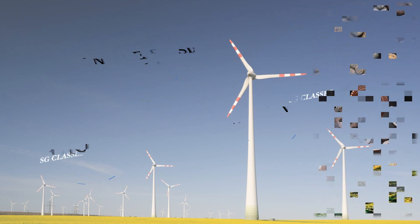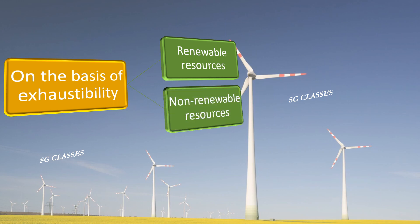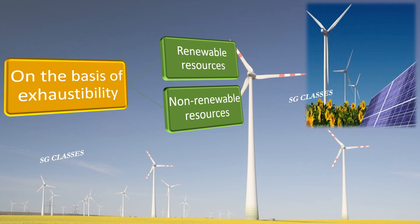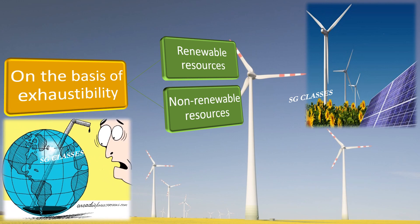On the basis of exhaustibility, resources are renewable and non-renewable. Renewable resources are those that can be replenished naturally. Some of these, like sunlight and air, are continuously available and their quantity is not noticeably affected by human consumption. Non-renewable resources, such as coal, gas or oil, once consumed cannot be replaced. Most energy resources currently in use are non-renewable.